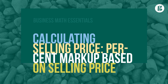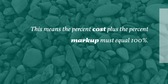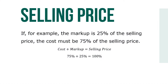When the percent markup is based on selling price, remember that the selling price is the base and represents 100%. This means the percent cost plus the percent markup must equal 100%. If, for example, the markup is 25% of the selling price, the cost must be 75% of the selling price, because cost plus markup equals selling price — so 75% plus 25% equals 100%.